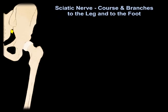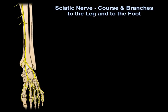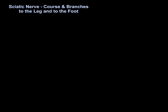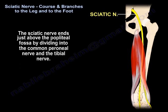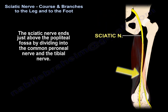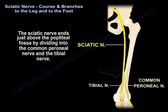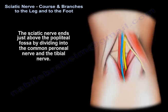Sciatic nerve course and branches to the leg and to the foot. The sciatic nerve ends just above the popliteal fossa by dividing into the common perineal nerve and the tibial nerve.